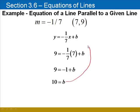Recall that we need to take that value back up to the original equation, substitute it for b, and we find the equation of our line is y equals negative 1 seventh x plus 10.